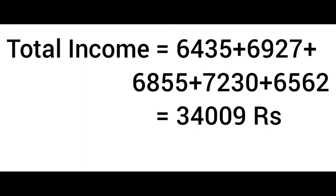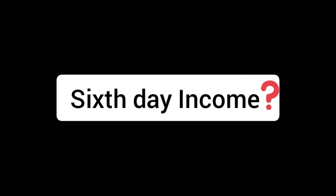How are we going to find the total income for 5 days? We add: 6,435 plus 6,927 plus 6,855 plus 7,230 plus 6,562, and we get 34,009 rupees. That is the total income for 5 days.